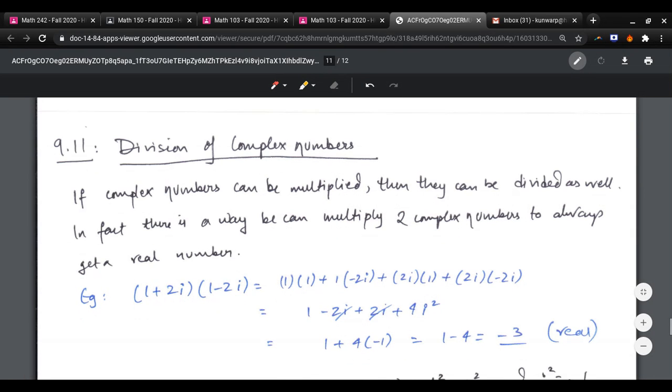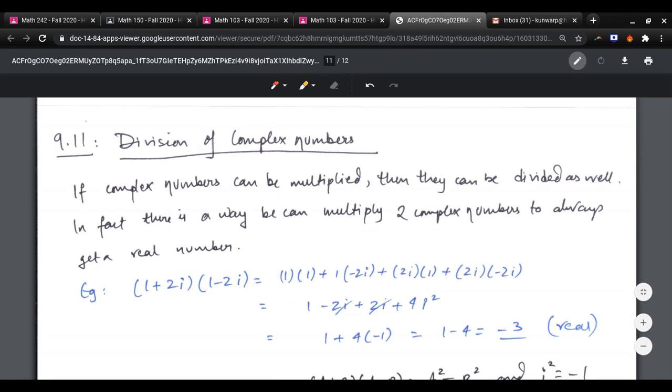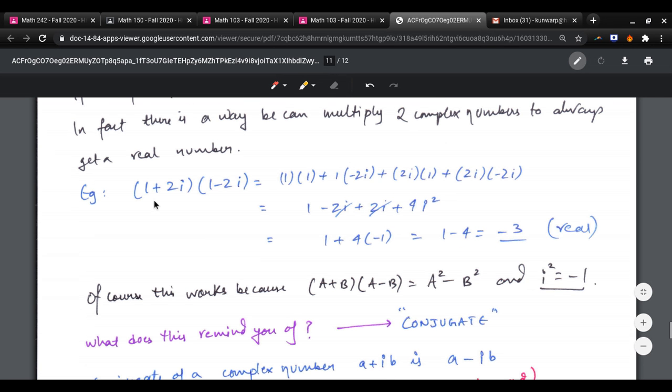The last topic is division of complex numbers. And we actually already have the tool that's going to help us to divide complex numbers. If complex numbers can be multiplied, then they can be divided. That's the idea. In fact, there is a way that you can multiply two complex numbers to always get a real number. Example, I'm picking these for a specific reason.